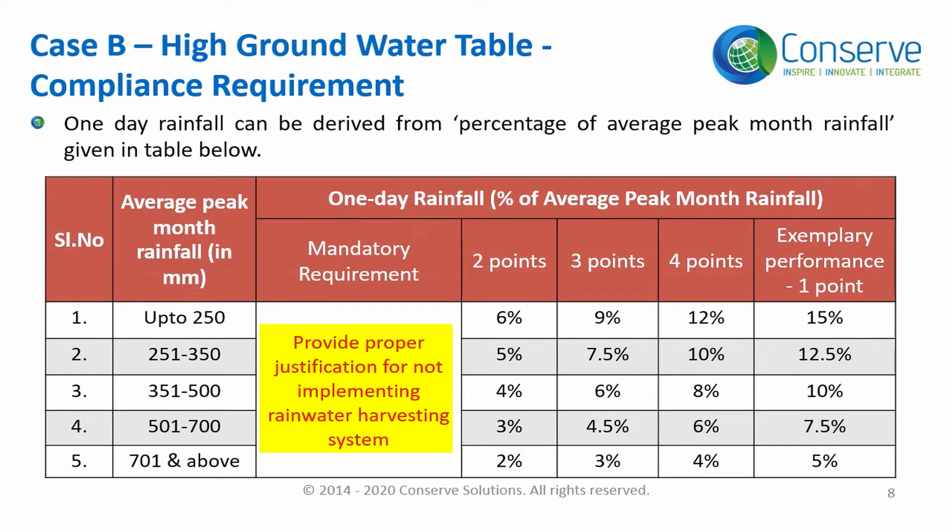But to score points, the project has to design a rainwater harvesting system to capture a percentage of the peak month average, as shown in the table. A point to note here is that the percentage requirement for Case B is around 50 percent of Case A.